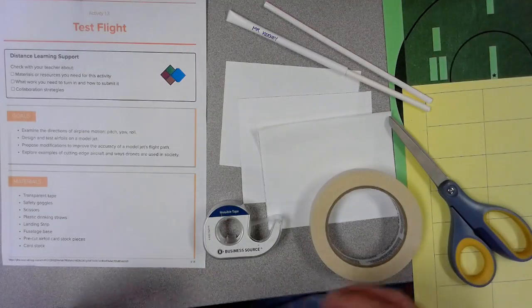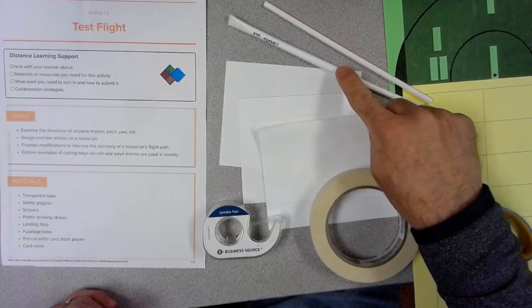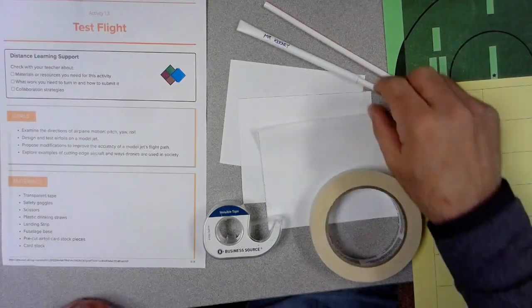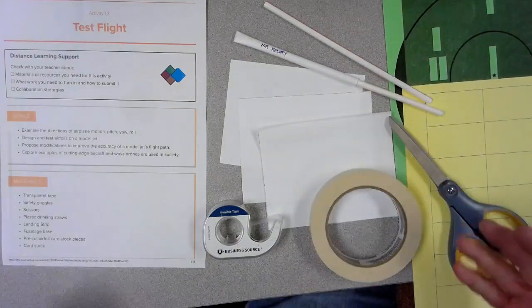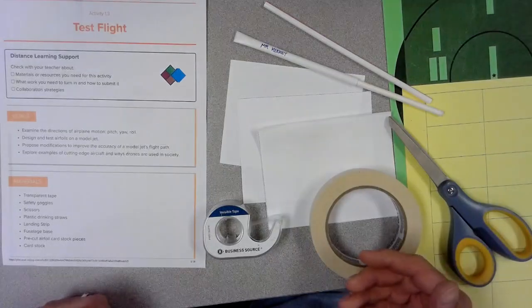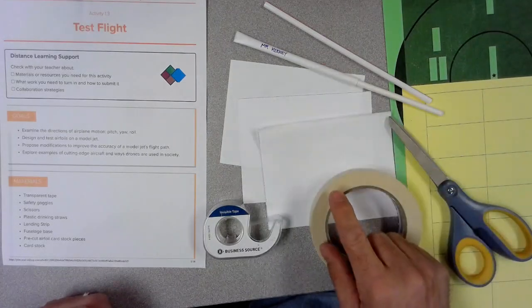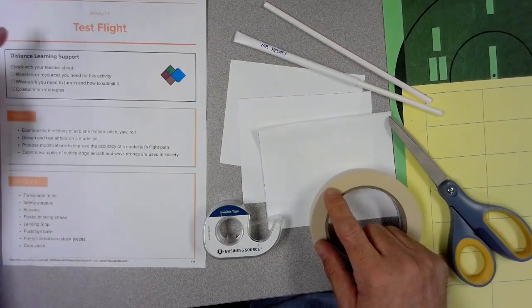Welcome back students. Now that you've tested your fuselage, you probably found out it doesn't fly very well without some wings. So for today's step, we're going to add some wings onto the fuselage and test it again.